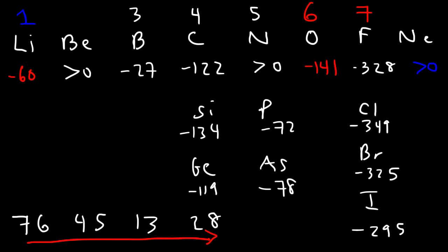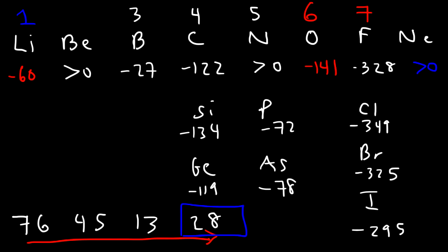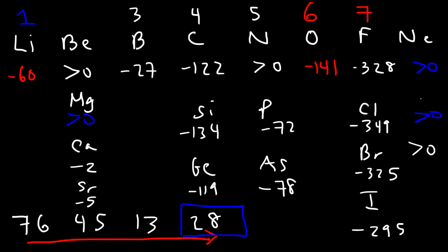Nitrogen is just an exception — it's endothermic. Group 1 tends to be more exothermic than group 3, while groups 2 and 8 are for the most part endothermic — though not all of them. Magnesium is endothermic, but calcium and strontium are slightly exothermic. The noble gases, however, are essentially all endothermic, as you can confirm by looking up electron affinity values.